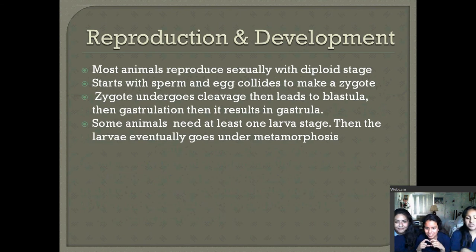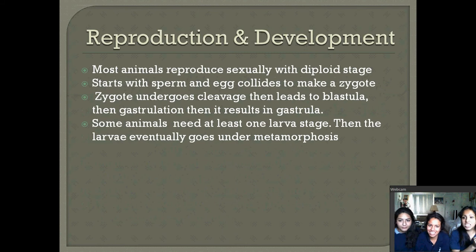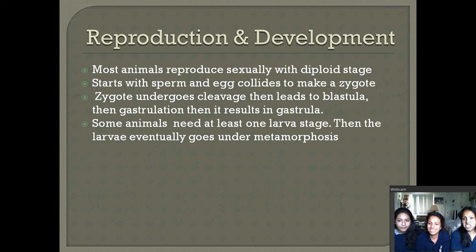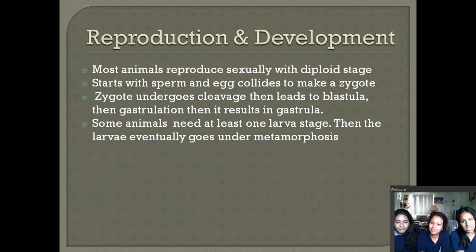Most animals reproduce sexually, which involves a sperm and an egg that fertilize to make a zygote. From there, the zygote goes into cleavage, which leads to the blastula, and then it goes through gastrulation.